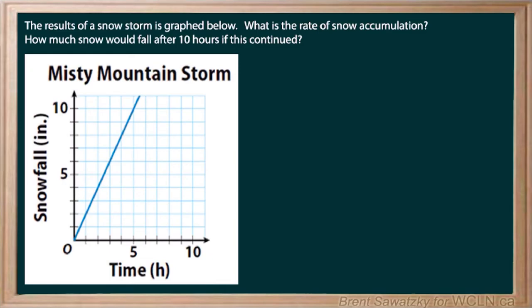Okay, so we have a snowstorm going on and somebody graphed it to try and get a feel for how fast this was accumulating. And the question is, if this carried on 10 hours from now, what can we expect as far as accumulation of snow?